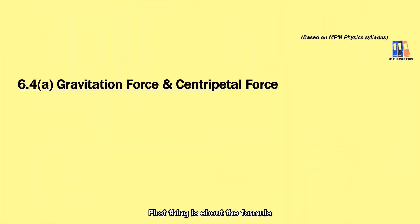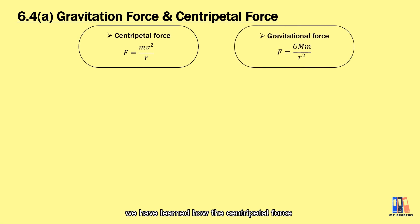First thing is about the formula that you can use to solve those questions. From the last few lessons, we have learned how the centrifugal force exists when the object is moving in circular motion. So our satellites are also moving around the Earth in a circular orbit. This is possible because of the gravitational force acted on the satellite, which serves as the centrifugal force for the circular motion.